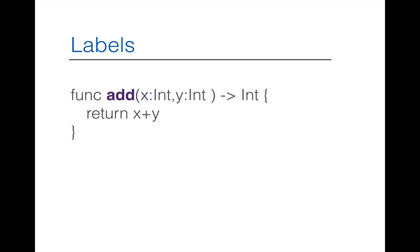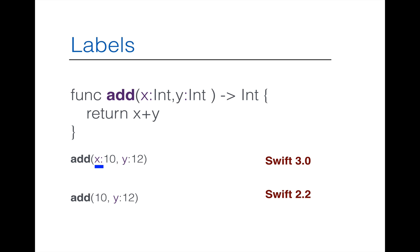Here is another example with an `add` function, which returns an integer that is the addition of two integer arguments, `x` and `y`. When calling this function in Swift 3.0, we include the first parameter label `x`. Previously with Swift 2.2, you didn't need to include the first parameter label — you'd write `add` and then directly provide the value, specifying only the second parameter label.